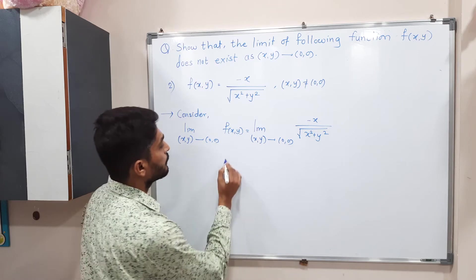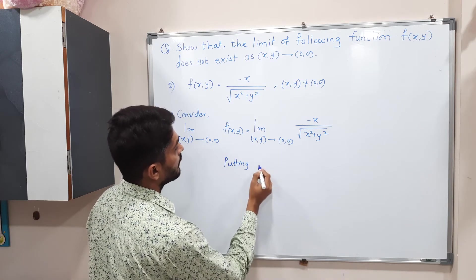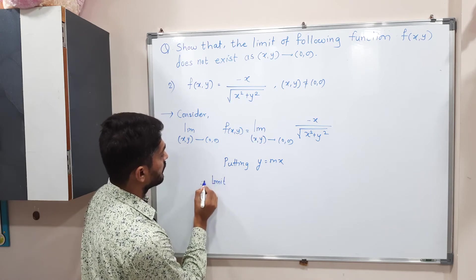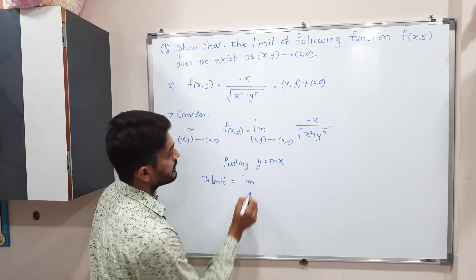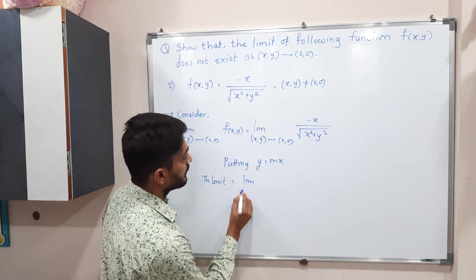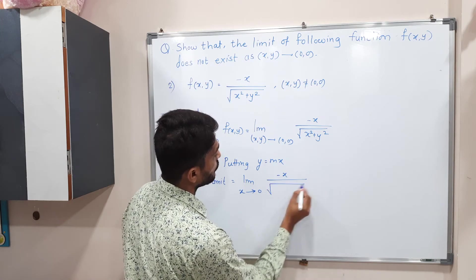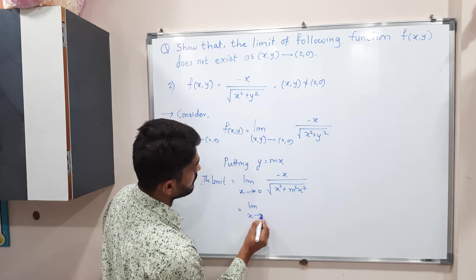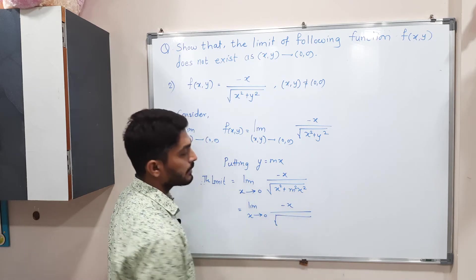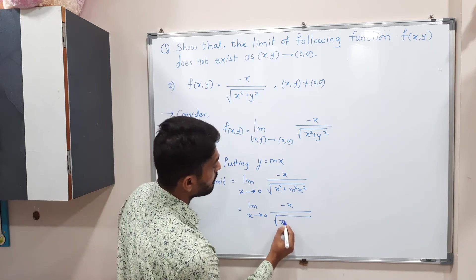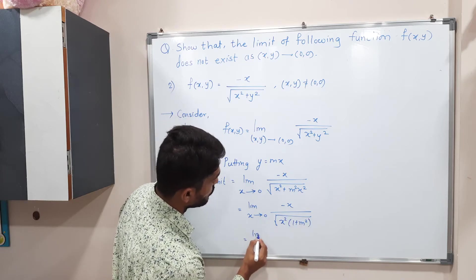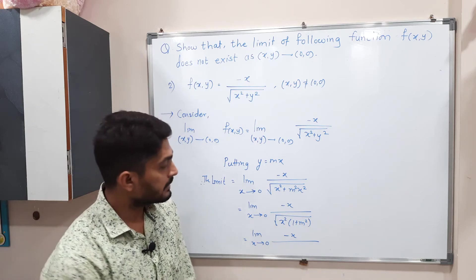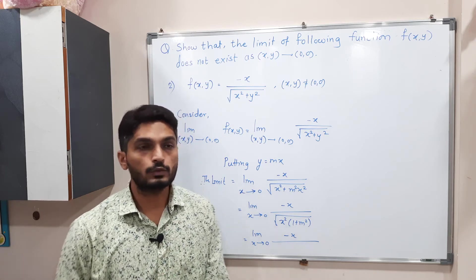This is a comparatively simpler problem. To convert the entire expression into x, I am putting y = mx. Therefore the limit becomes limit as x tends to 0 of -x(mx) / √(x² + m²x²), which equals limit as x tends to 0 of -mx² / √(x²(1 + m²)). Taking x² common inside the square root, the square and square root cancel, giving simply |x| in the denominator.